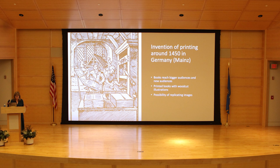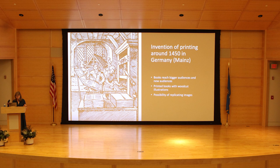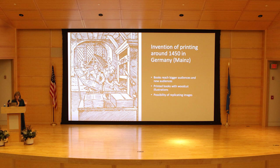The second big shift relevant for the development of scientific illustrations is the invention of printing. The printing press using movable type was developed around 1450 in Mainz, Germany. The printing press allowed printers to make larger quantities of books at much cheaper prices than in the manuscript era, so books could reach bigger and new audiences. Particularly relevant to our story is that from very early on, printed books included illustrations done with woodcuts — later copper engravings and other technologies — but from the earliest days of the printed book, illustrations were part of it. This led to new possibilities for replicating images, which is important for the development of scientific illustration.